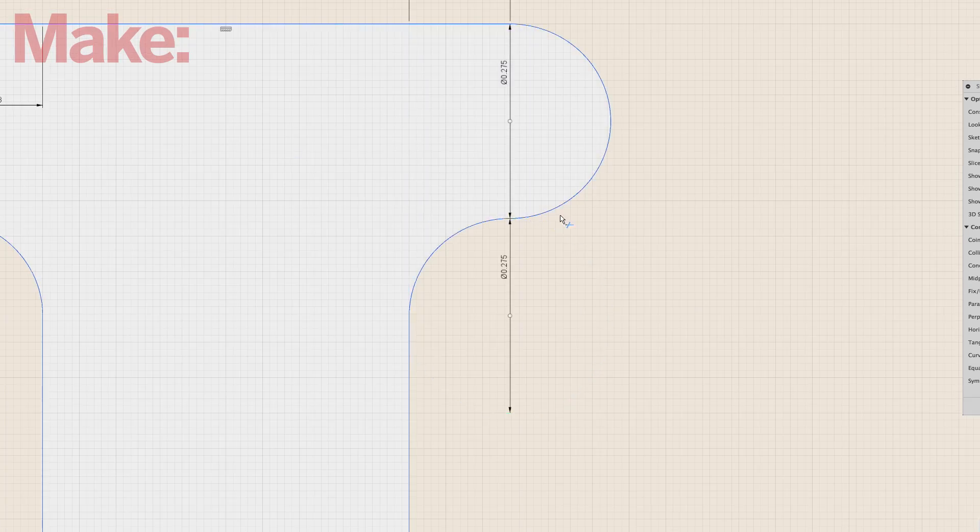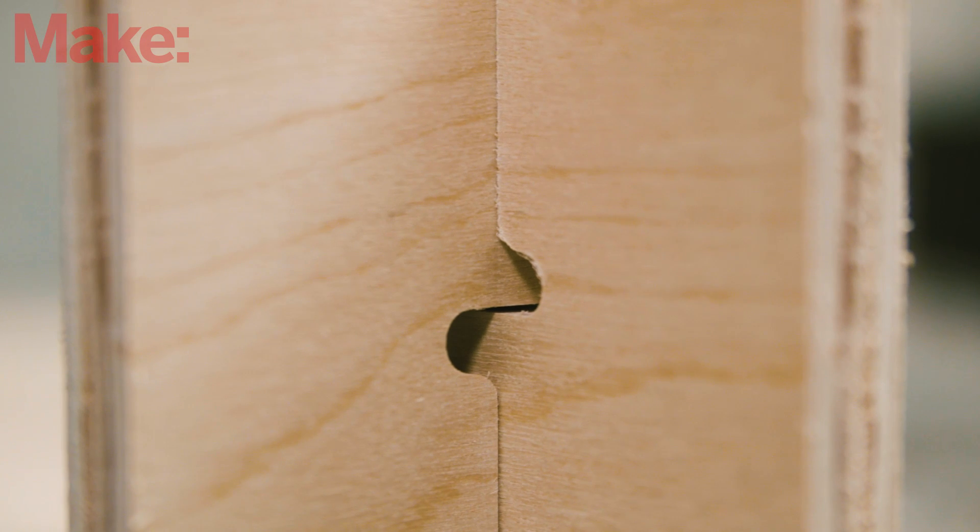These fillets produce nice swooping lines away from your joins that almost look like the sounding holes on a violin. Just keep in mind this fillet produces the least amount of gluing surface.